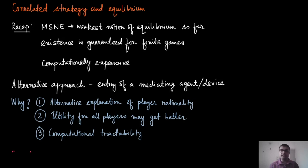Why is a correlated strategy required? The first reason is that you have an alternative explanation for player rationality. If I pick strategies independently, there is a positive probability that we will choose different games and both get zero payoff. A rational agent will try to incorporate a device like a coin toss, and it will be self-enforcing for both agents to follow the device outcome.